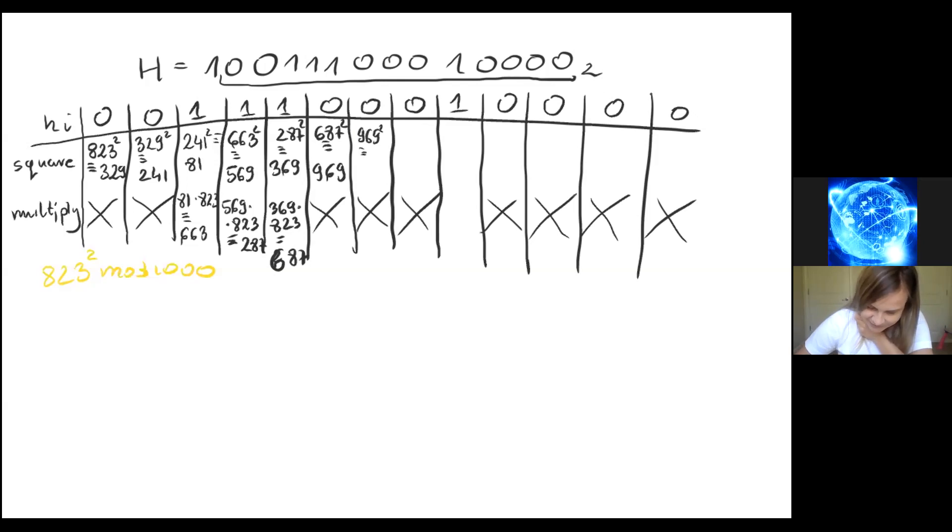969 squared, that gives us 961. Then we have 961 squared, that gives us 521. 521 squared, this is congruent to 441. Here we do have to do multiplication times 823, so that gives us 943. And then we have 943 squared, this is congruent to 249.